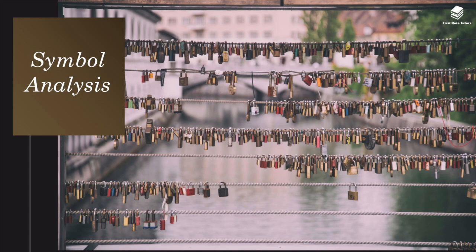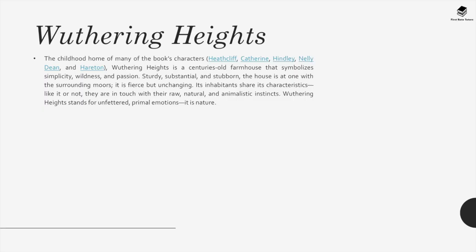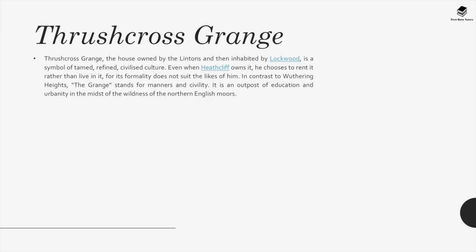Moving on to symbol analysis. Wuthering Heights — the childhood home of Heathcliff, Catherine, Hindley, Nelly Dean and Hareton — is a centuries-old farmhouse that symbolizes simplicity, wildness and passion. Sturdy, substantial and stubborn, the house is at one with the surrounding moors. It is fierce but unchanging. Its inhabitants share its characteristics: like it or not, they are in touch with their raw, natural and animalistic instincts. Wuthering Heights thus stands for unfettered, primal emotions. It is nature. Thrushcross Grange...